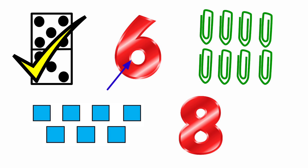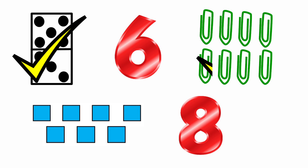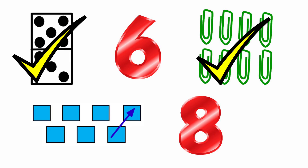Look at the next one — they have given number six, so we should not tick it. Look at the next one: one, two, three, four, five, six, seven, eight — there are eight paper clips, so we are going to tick the picture. Look at the next one: one, two, three, four, five, six, seven — there are only seven squares, so we should not tick the picture.